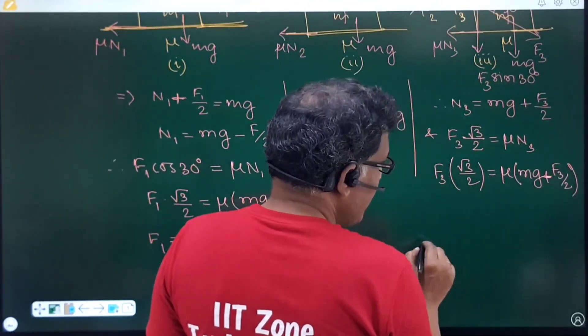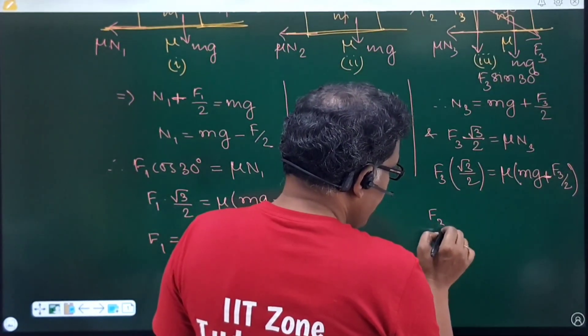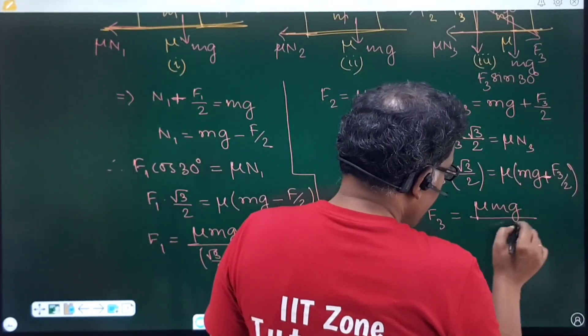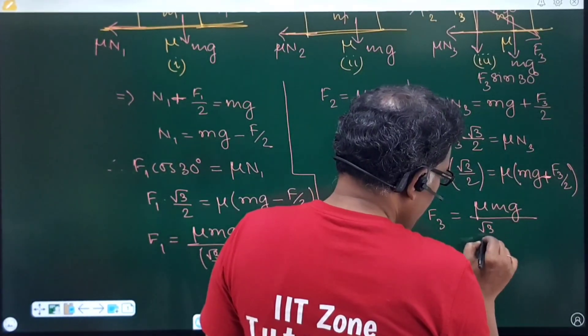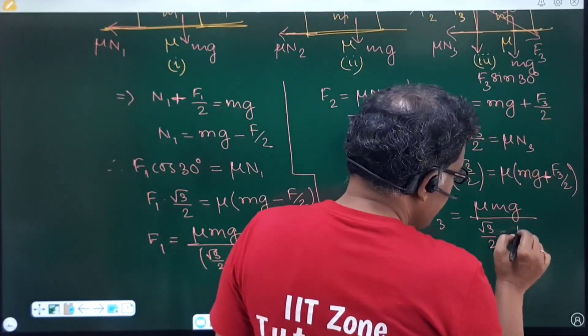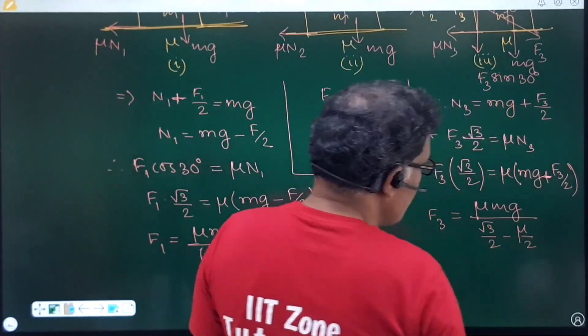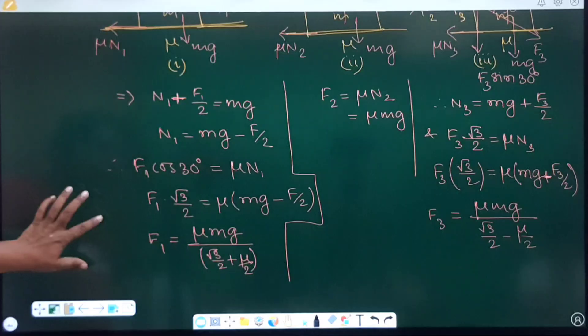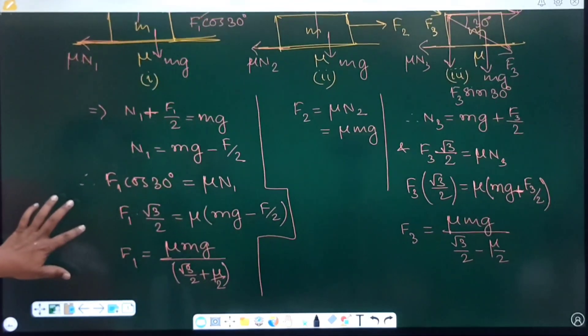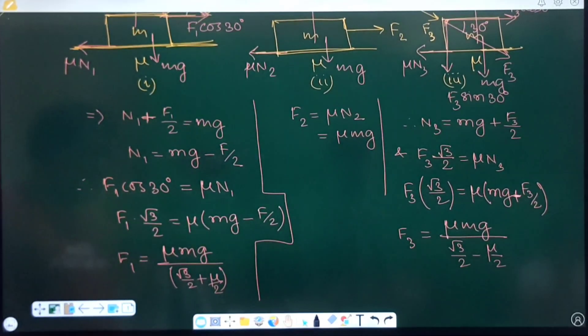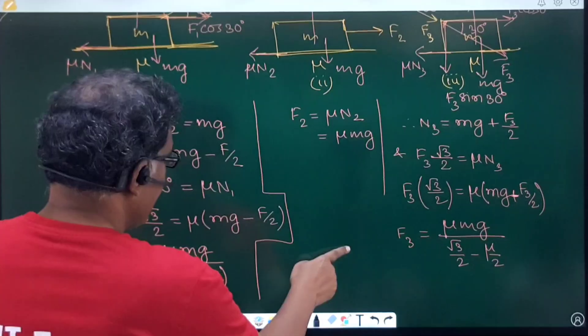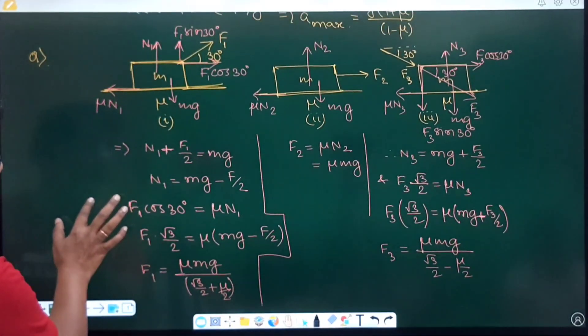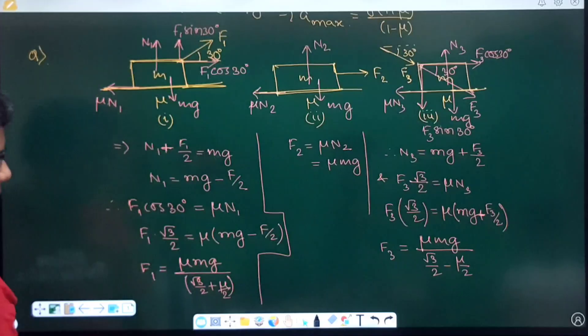So, all together F3 can be written mu Mg divided by root 3 by 2 minus mu by 2. Here also it will be mu by 2. So, these are the three results in three cases. You can compare the calculation along with the FBD. It is quite obvious.